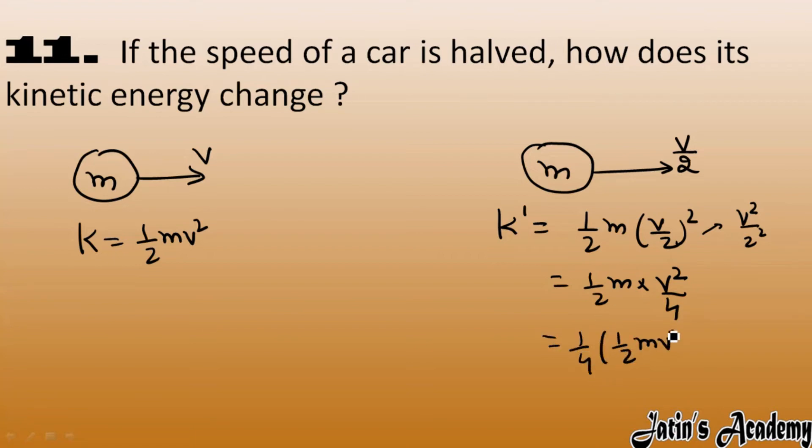mv square. So half mv square we have equals to the kinetic energy k. So k dash we got it as 1 by 4k.